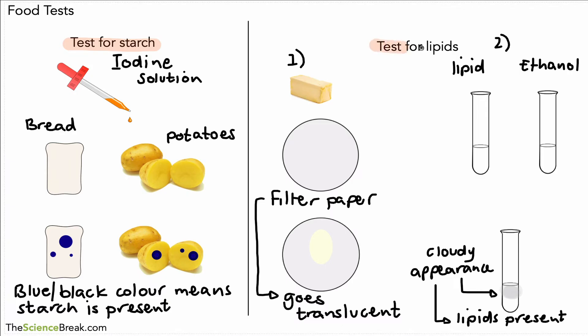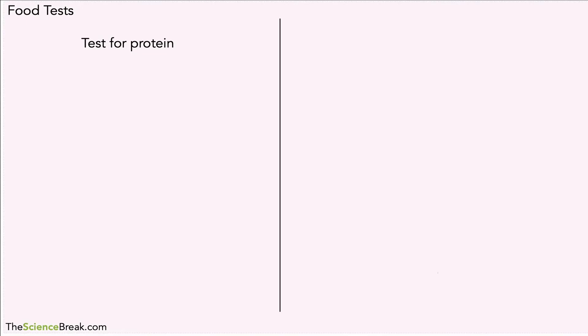Next, we can test for protein. Here we have a container where we might think there's some protein, for example milk. We have a special solution called biuret solution. It's very important we get the spelling correct because it looks like a couple of other potential science words.